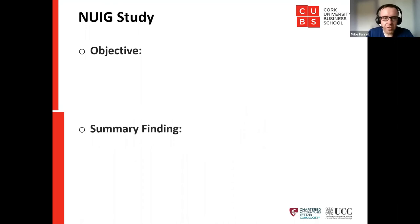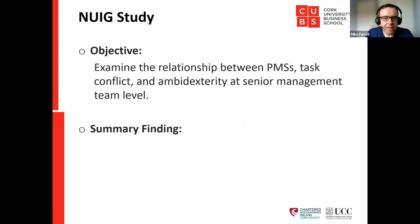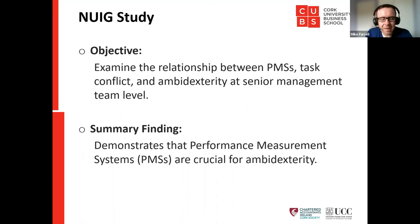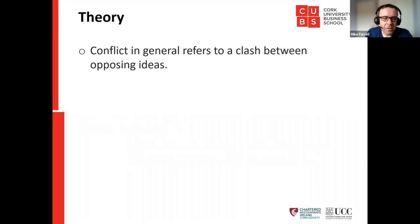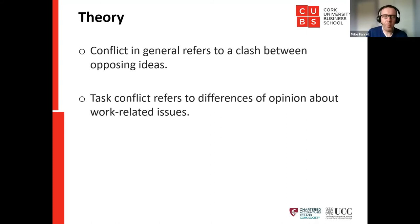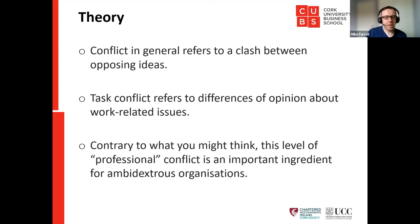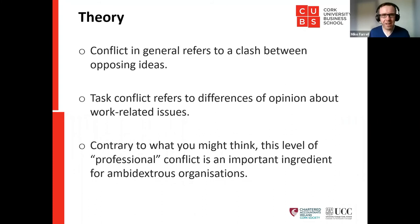The NUI Galway study — a separate but related research stream — examined the relationship between performance measurement systems, task conflict, and ambidexterity at senior management team level. The theory examined was conflict. Conflict in general refers to a clash between opposing ideas; task conflict reflects differences of opinion about work-related issues. Contrary to what you might think, professional conflict is an important ingredient for ambidextrous organisations. There is cognitive conflict — disagreeing with someone but not holding it against them — and affective conflict, where you take it personally.